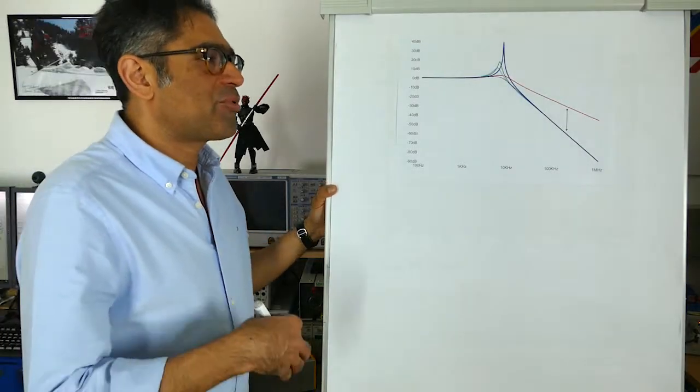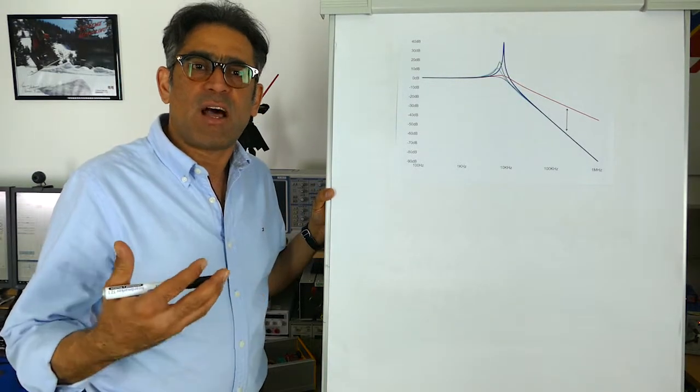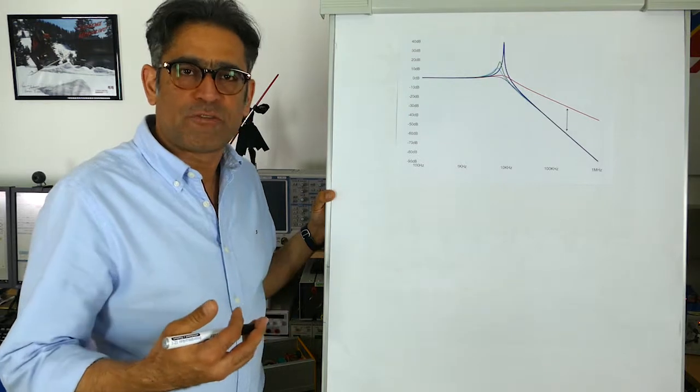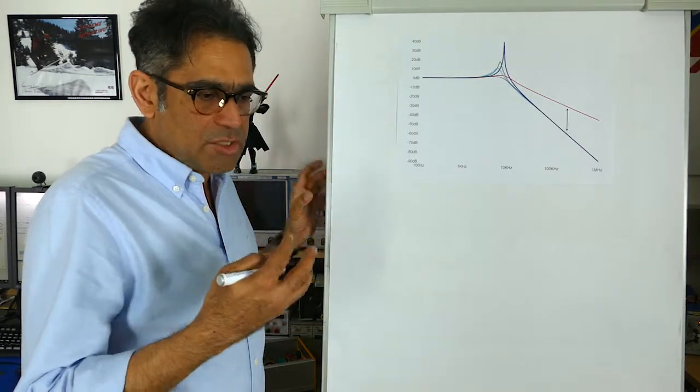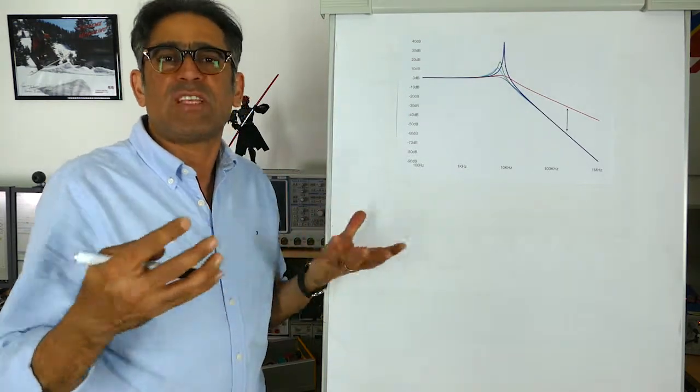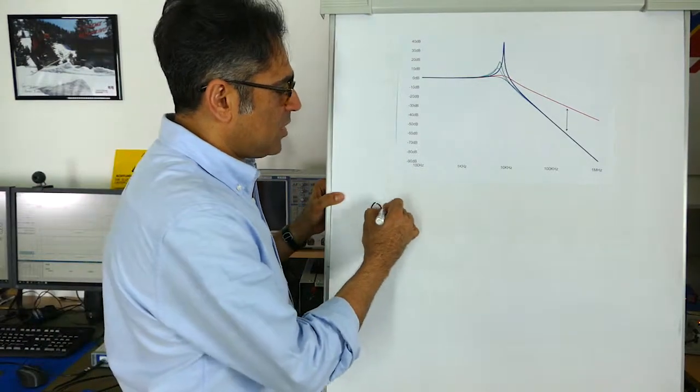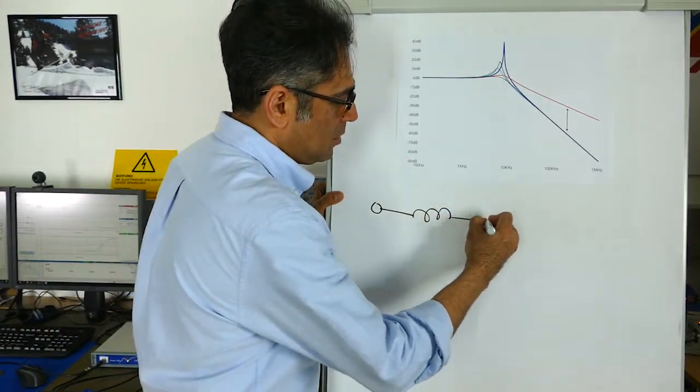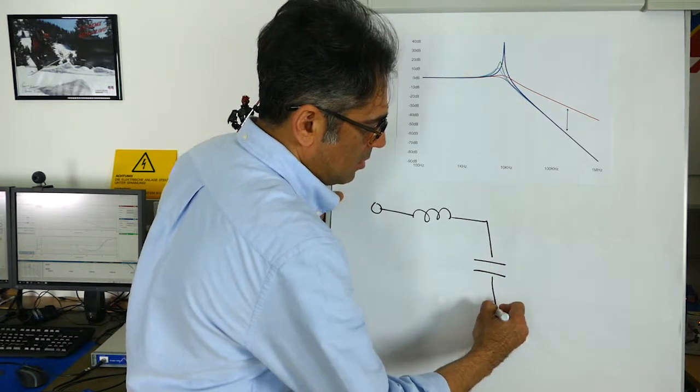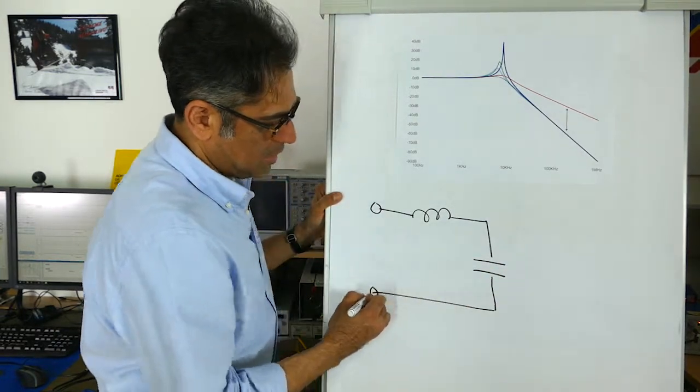So in one of our previous videos we designed a differential mode filter. In that video we calculated a value of C and a value of L and we basically said that we have got a filter like so.